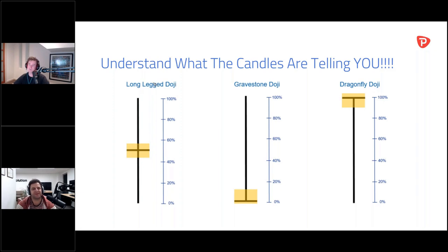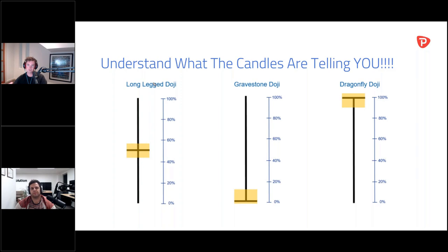Understanding what candles are telling you is something we focus on a lot. Tyrone was instrumental in changing the way we look at candles — breaking everything down to statistical analysis and thinking about what each candle is telling you. When you understand the important candles versus the rubbish ones, you'll become a better trader whether you're a scalper, day trader, or swing trader. Let's focus on the long-legged doji — what is it telling us about the market?